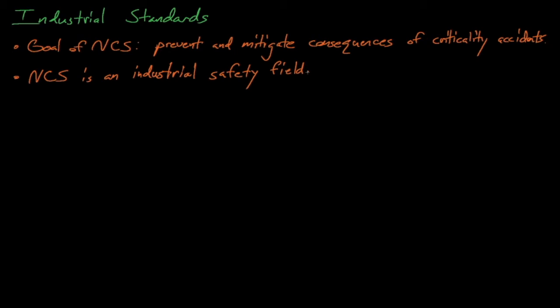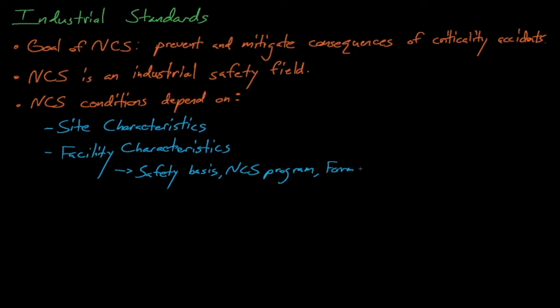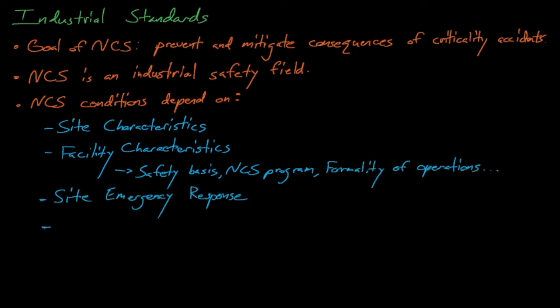Developing one single recipe for a criticality safety program can be difficult because of the potentially huge variance in how a site operates. The criticality safety plan for a site can also depend on the goals and characteristics of the facility, the scale and frequency of fissile material operations, the potential consequence of criticality accidents, the site's ability to respond to accidents, any special requirements from the site's regulators, and about half a hundred other factors. Some sites, such as Sandia National Laboratories, might maintain a relatively small amount of fissile material used in a limited set of criticality experiments, while other sites, such as Los Alamos National Laboratory or Y-12, might routinely convert large volumes of fissile solution into fissile metal parts and then machine that metal into a variety of shapes.